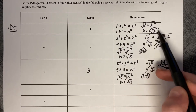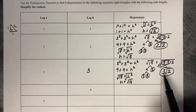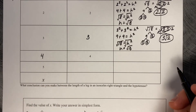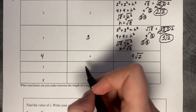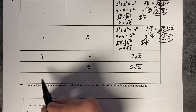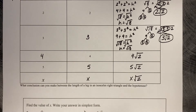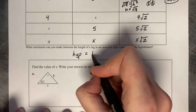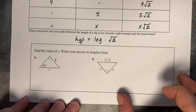Now let's see the pattern: leg=1 gives hypotenuse of square root of two; leg=2 gives hypotenuse of two square root of two; leg=3 gives hypotenuse of three square root of two. If leg=4, the hypotenuse is four root two; if leg=5, the hypotenuse is five root two. In the general case, if one leg is x, the other leg is also x, and the hypotenuse is x times the square root of two.